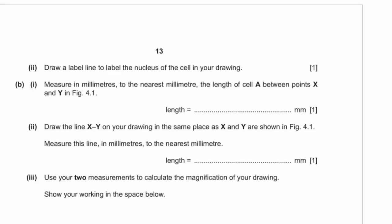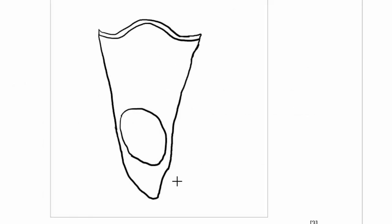A2: draw a label line to label the nucleus in your drawing. The nucleus is right here. The label line should be drawn with a ruler as a straight line — there is no arrowhead at the end. A label line does not involve an arrowhead. Then write the label: nucleus.